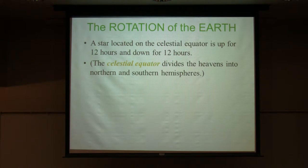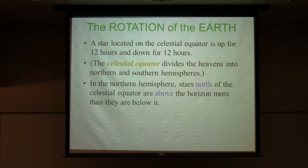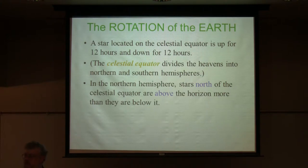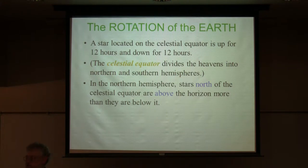For stars north of the celestial equator, they're above the horizon more than they're below it. The ultimate example is the circumpolar constellations like the Little Dipper — up all the time. The stars in the northern part of Orion, his shoulder and head, are up more than 12 hours because they're getting closer to Polaris. The ones farther away — like Rigel at his heel — are not quite up 12 hours. The 12-hour rule applies only to the celestial equator, where Orion's belt is.